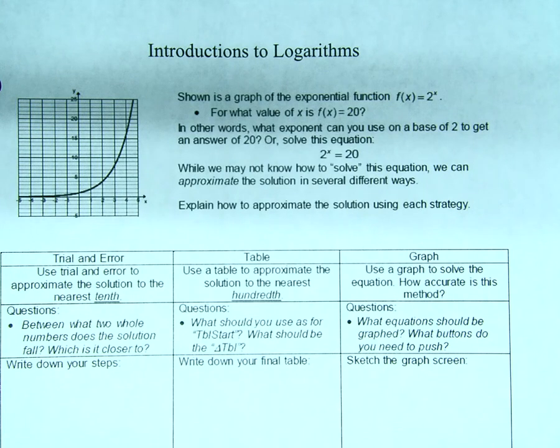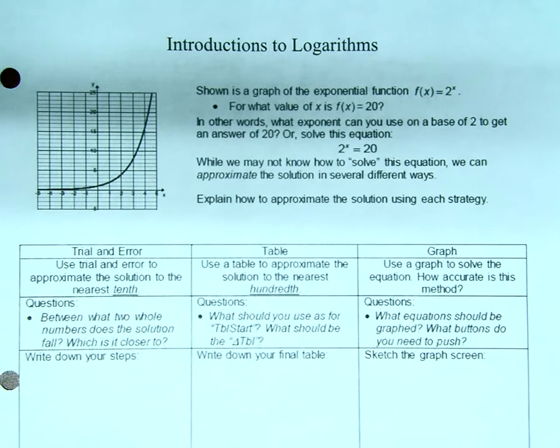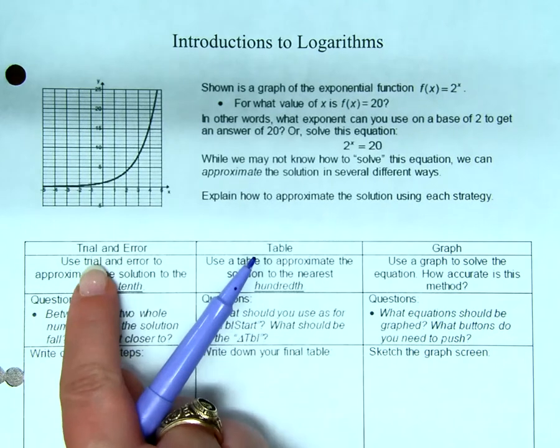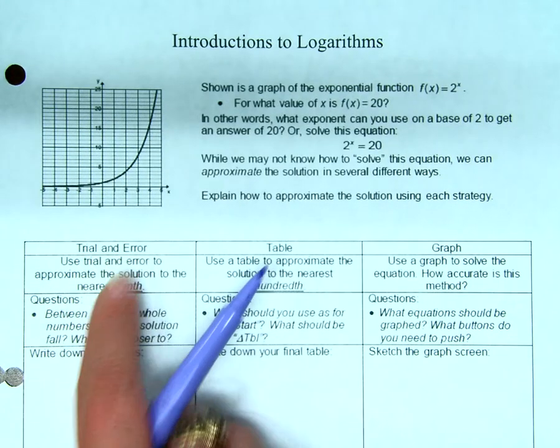Okay, so 2 to what power is 20? Some number, okay, that's correct. Do you happen to know which number? It's not a whole number though, right? Okay, so there are several different ways we can go about figuring that out. One of your favorite ways is guessing, right? Trial and error.